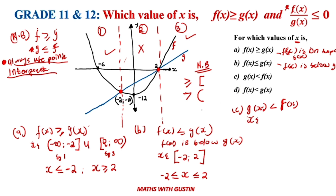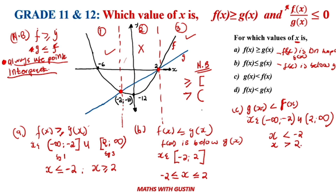In set notation: x is an element of negative infinity to negative two, or positive two to positive infinity. In inequality notation: x < −2 or x > 2. That's how you would explain question C.